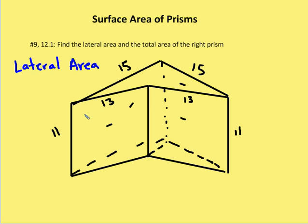The first one is going to be 11 by 13. We have to multiply that by two. And the second is going to be 11 by 15. And again, we have to multiply that by two to get our total lateral area.